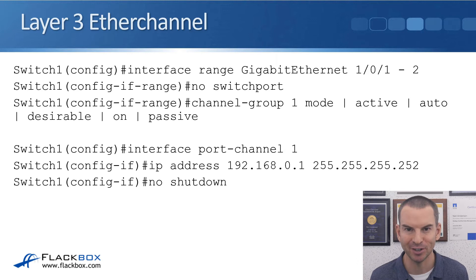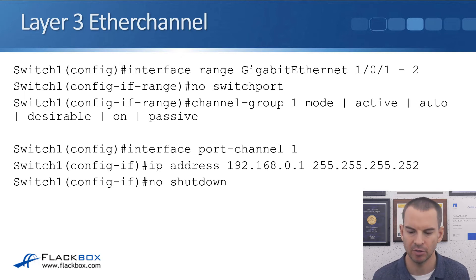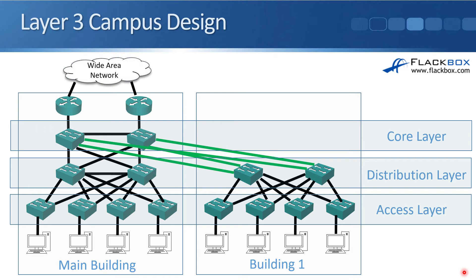This could have been a really short lecture, but there's another implication I want to talk about: network design. Looking at our traditional campus design with the core, distribution, and access layers, the original approach used layer 2 links between the access layer switches and the distribution layer switches. A growing trend now is putting layer 3 links everywhere, which means you're not using spanning tree anymore.